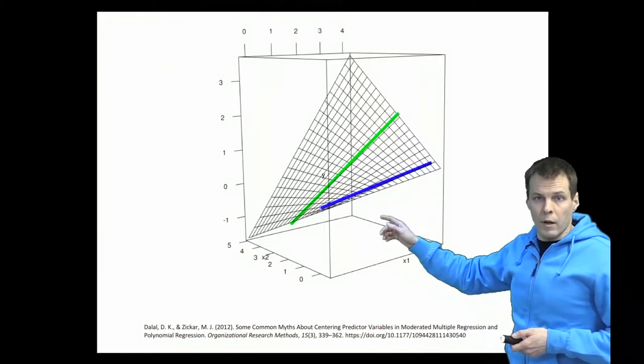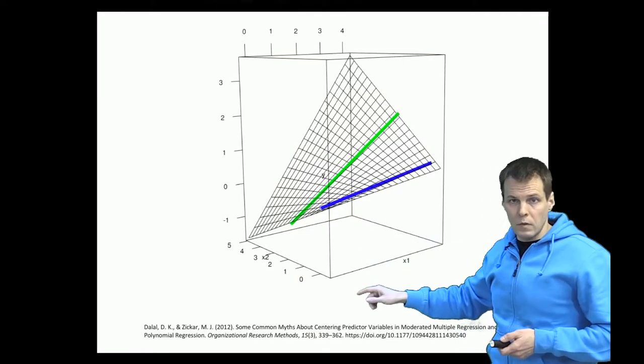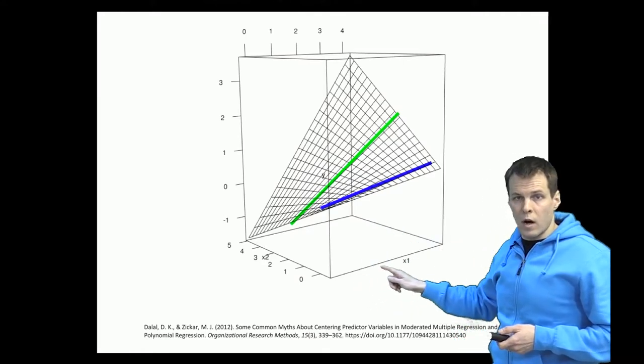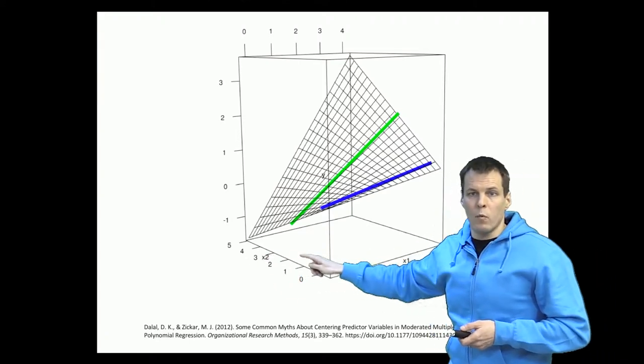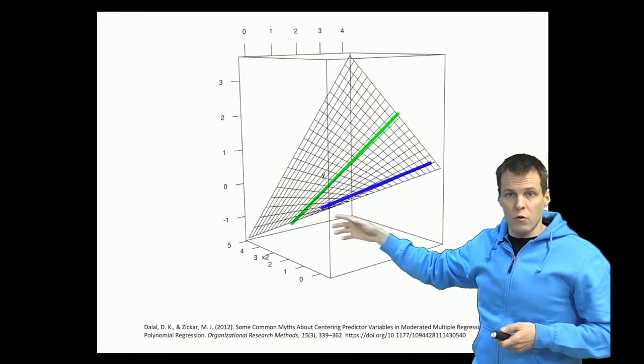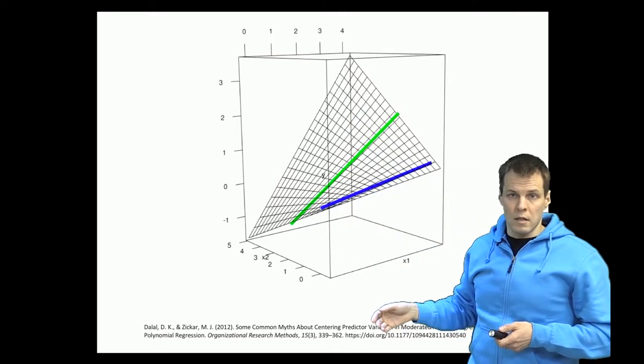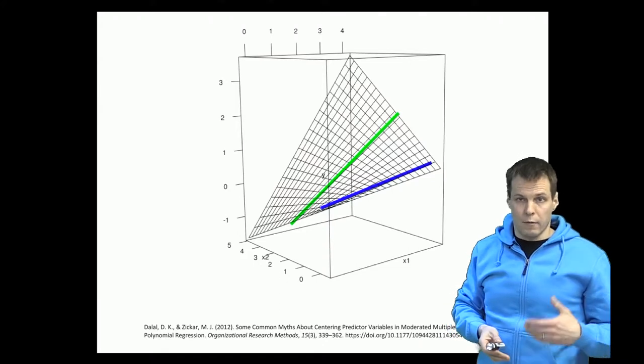So we have here a space and there is a plane in the space. Here we have our X1 on this axis, we have X2 on this axis and then we have Y here. So when we have two coefficients or two variables in a regression analysis as two independent variables then the regression is a plane in three-dimensional space.